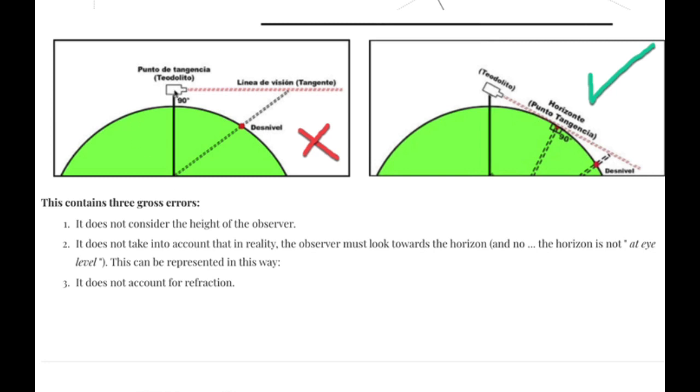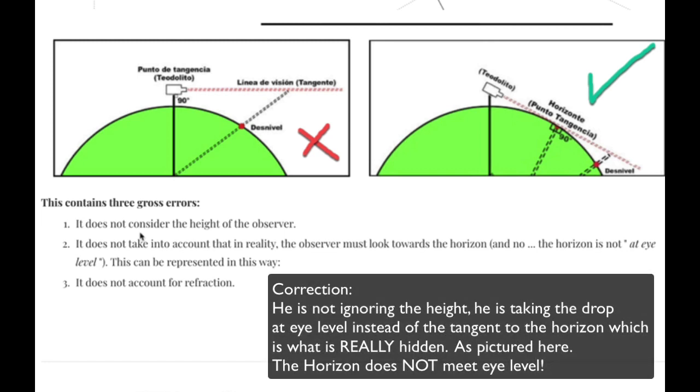So where did he go wrong? This is actually a very common mistake amongst flat-earth experiments like this. You can see right here, what he's doing is he's taking this drop as a tangent line across the surface. That is, he's ignoring the height of 1.833 feet above the water level. In reality, on the right here, this is what we should be doing. We should be taking the viewer height and looking down at the tangent point.